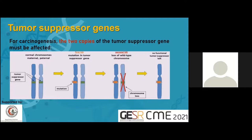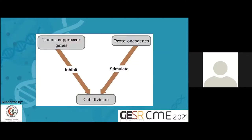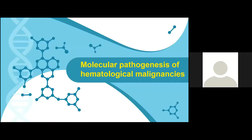If only one copy is affected, this will not lead to carcinogenesis because the other copy will maintain function. With two copies of the tumor suppressor gene present, in the first hit, a mutation in one copy occurs — at this point we are still normal, no cancer. But if a second hit occurs, the chromosome loses its wild-type copy, leading to a non-functional tumor suppressor. In conclusion, tumor suppressor genes inhibit cell division while proto-oncogenes stimulate cell division.